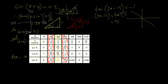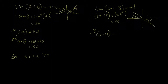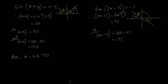For tan(theta) = 1, the angle is 45 degrees (pi/4 in radians). So we have 45 degrees in the second quadrant and the fourth quadrant. The compound angle 2x − 15 is the angle, so in the second quadrant: 2x − 15 = 180 − 45 = 135 degrees.